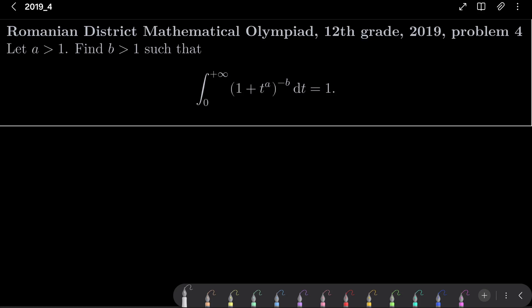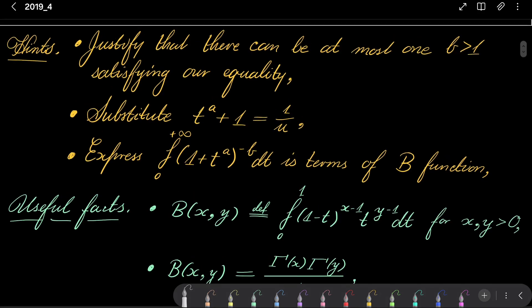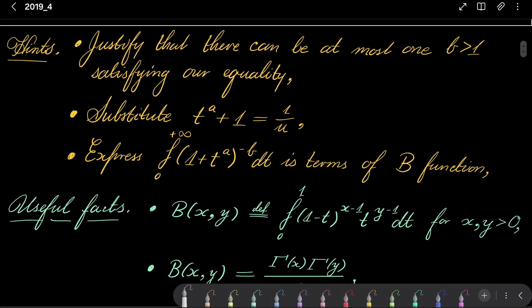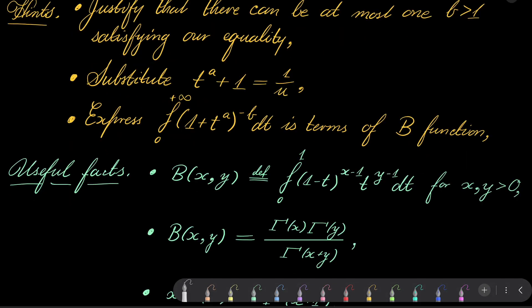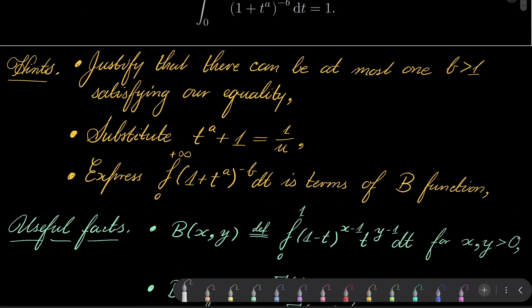So it's a nice problem, and I can use this video to introduce a new function to you. Here are my hints. First, justify that there can be at most one b greater than 1 satisfying our equality. And crucially, do the following substitution: put t to the power of a plus 1 to be 1 over u, and express our integral in terms of the famous beta function.